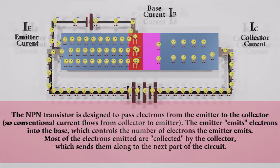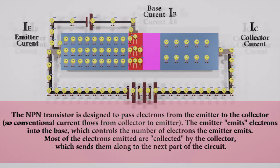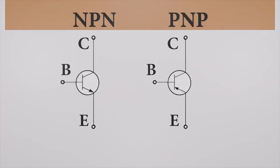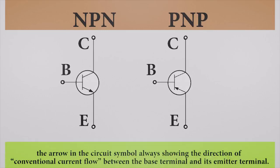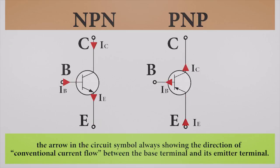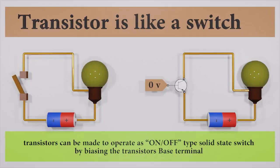The construction and circuit symbols for both PNP and NPN bipolar transistors are like this. The arrow in the circuit symbol always shows the direction of conventional current flow. The transistor is kind of like a switch.